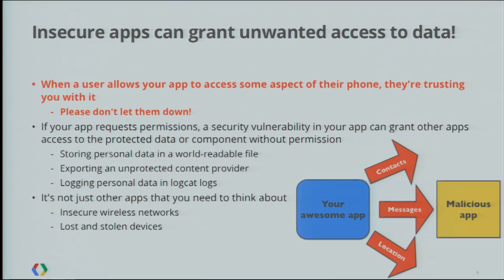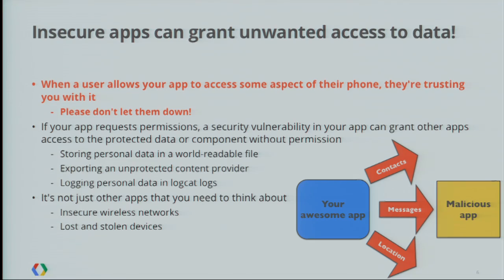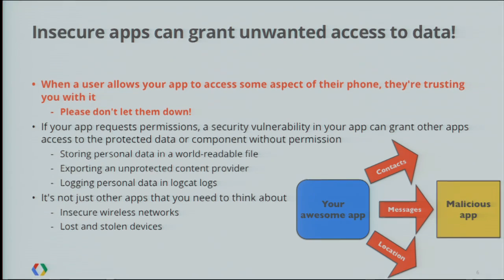Another one we see a lot is logging personal information in the Logcat logs — we've seen people logging email addresses or even passwords. It's usually just leftover lines of code from debugging that people forget to remove, but it's a pretty serious problem. We have made some improvements to the logging system in Jelly Bean — apps can no longer read the Logcat logs for other apps — but it's still a very bad idea to log any personal data to Logcat logs regardless.